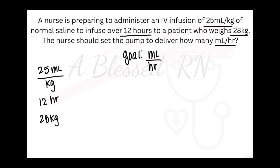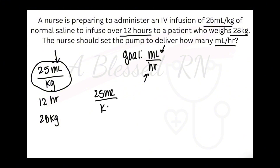The first puzzle piece has to have milliliters on the top, because that is what my goal has. So I will put the puzzle piece that has milliliters first, and make sure milliliters is on the top. Keep your puzzle pieces together — do not separate them. Now we have kilograms on the bottom. I need my kilograms to cross out because they are not part of the goal. What's on the bottom has to match the exact units on the top in order to cross out. So we'll cross out our kilograms.